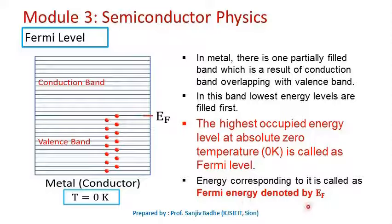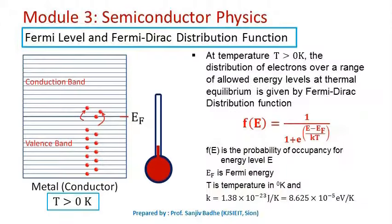The energy corresponding to the Fermi level is called Fermi energy, denoted by EF. At T = 0 Kelvin, all energy levels below the Fermi level are completely filled and all energy levels above the Fermi level are completely empty. The Fermi energy level is defined as the highest occupied energy level at absolute zero temperature.